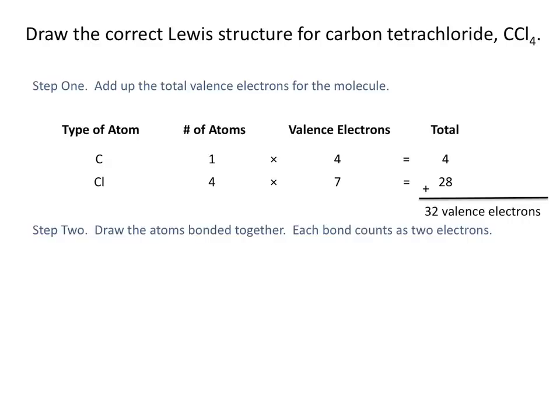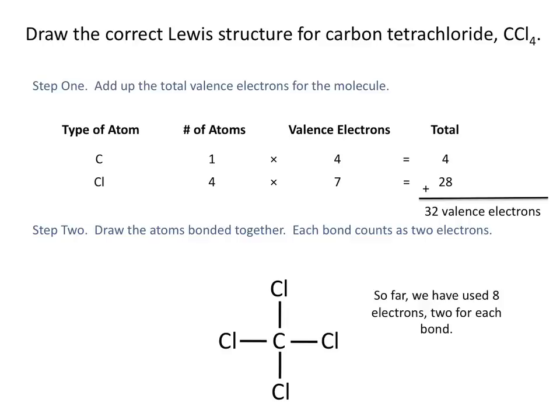The second step is to draw the atoms bonded together, remembering that each bond counts as two electrons. We'll draw carbon in the middle, since it's the central atom, bonded to four chlorine atoms. At this point we have used eight of our valence electrons — two electrons in each bond — which means we have 24 electrons left to draw in our structure.